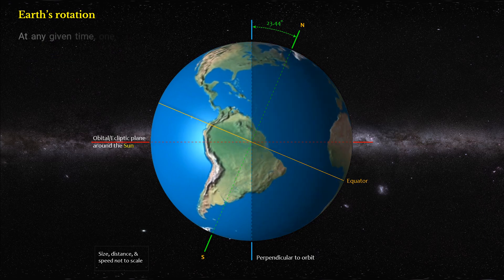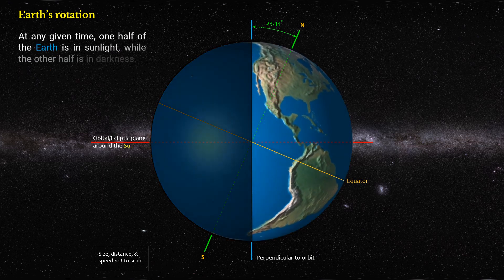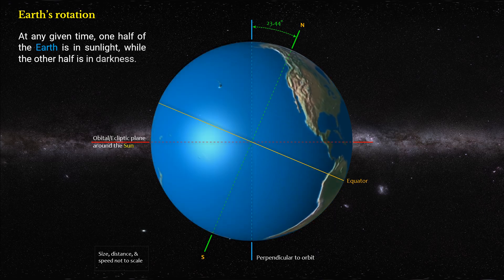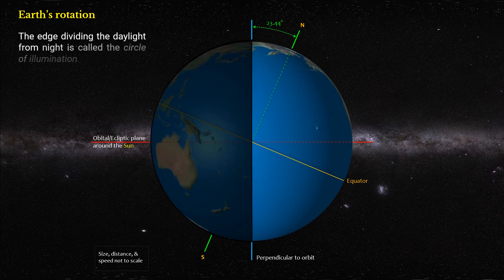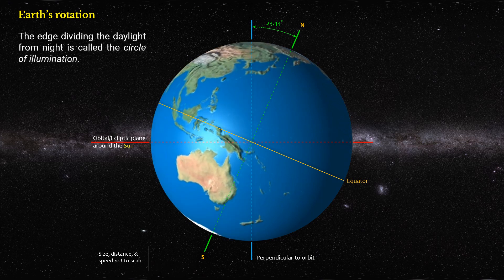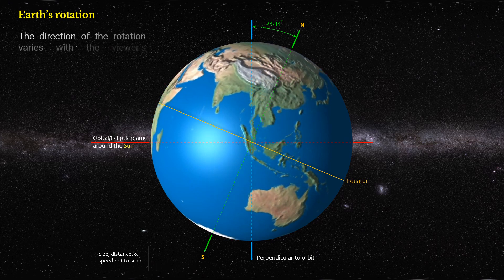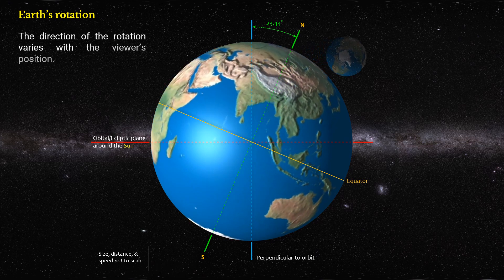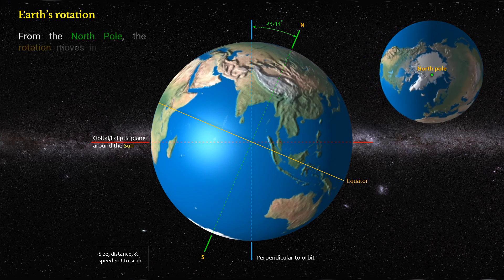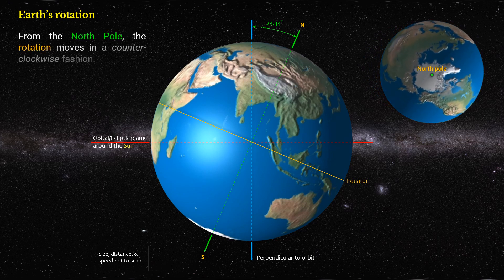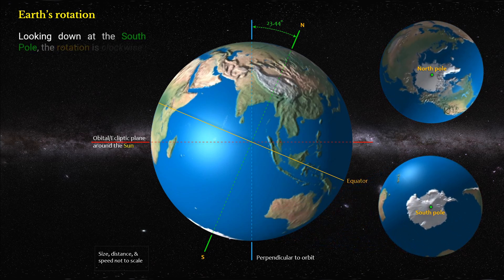At any given time, one half of the Earth is in sunlight, while the other half is in darkness. The edge dividing the daylight from night is called the circle of illumination. The direction of rotation varies with the viewer's position. From the North Pole, the rotation moves in a counterclockwise fashion. Looking down at the South Pole, the rotation is clockwise.